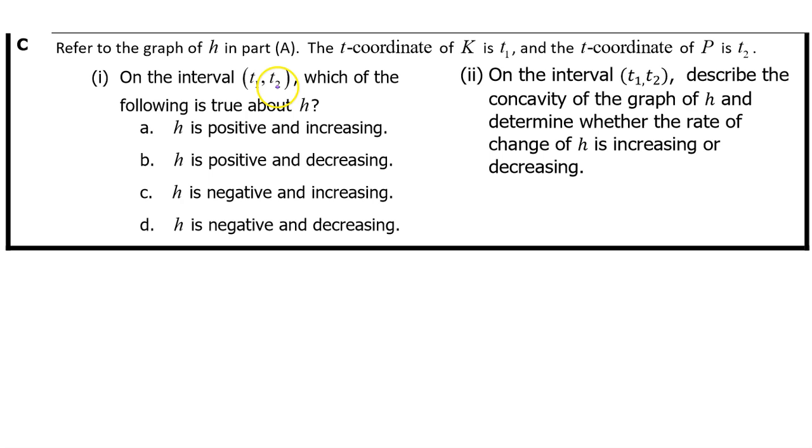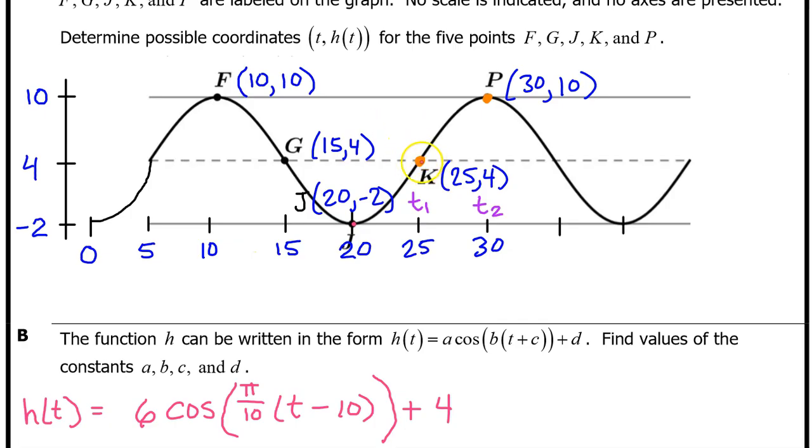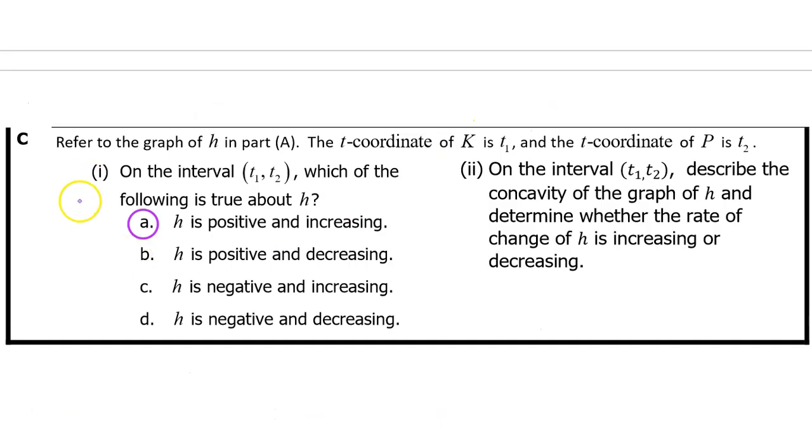See Part 1. On the interval from t₁ to t₂, which of the following is true about h? Is h positive and increasing, positive and decreasing, negative and increasing, or negative and decreasing? On the interval from t₁ to t₂, h(t) is definitely positive because all of the output values are between positive 4 and positive 10. Also from t₁ to t₂, h(t) is increasing. You can see how it's rising from left to right. So h(t) is positive and increasing on the interval from t₁ to t₂. So the answer is A.